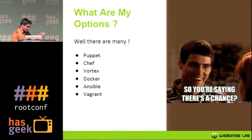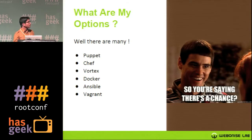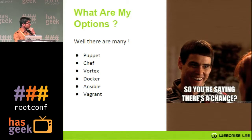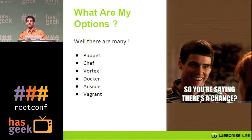There are a lot of options available in the market and the open source community. You can use a configuration management tool, but that requires some sysadmin or DevOps practices. Options include Puppet, Chef, Docker, Ansible, and Vagrant. We personally chose Vagrant as the tool we can distribute to each and every team member in our organization, to help set up a fast development environment.